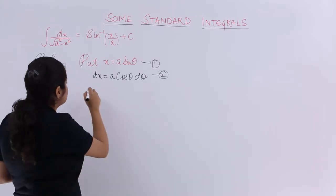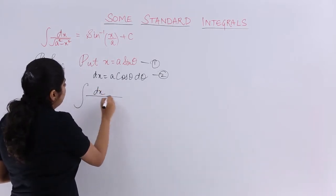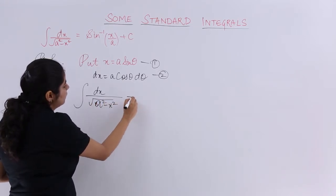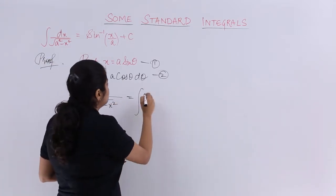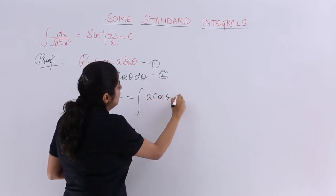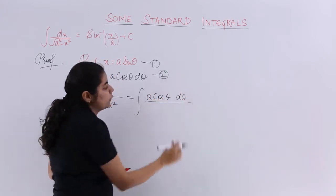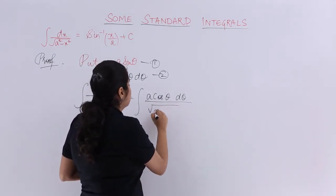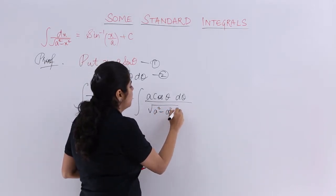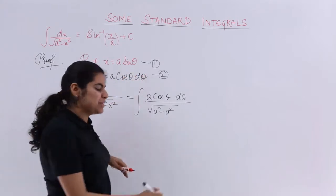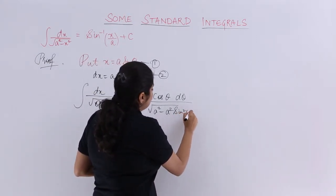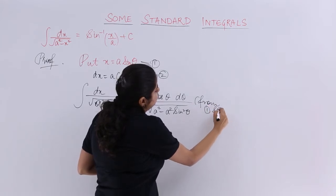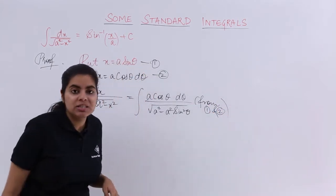Just put in the question dx upon under root a square minus x square. Put values: dx is nothing but a cos theta d theta from your equation number two, and under root a square minus x square - a square as it is, minus x square is a square sine square theta. And I write from one and two, because it is because of these two equations that I am writing it.